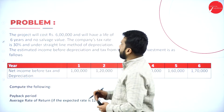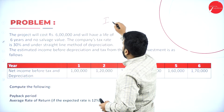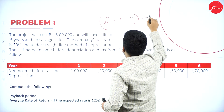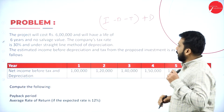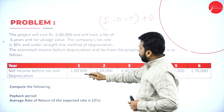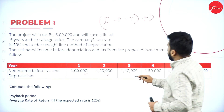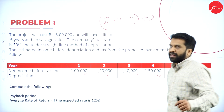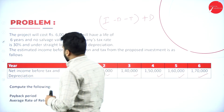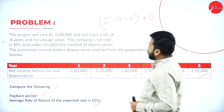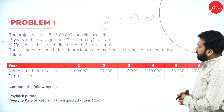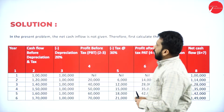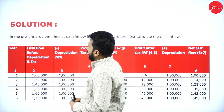Whatever income is there, you have to minus depreciation, minus taxation, then add back depreciation. The income figures are: one lakh, one lakh twenty thousand, one lakh forty thousand, one lakh fifty thousand, one lakh sixty thousand, and one lakh seventy thousand. Compute the payback period and average rate of return. The expected rate of return given is twelve percent.